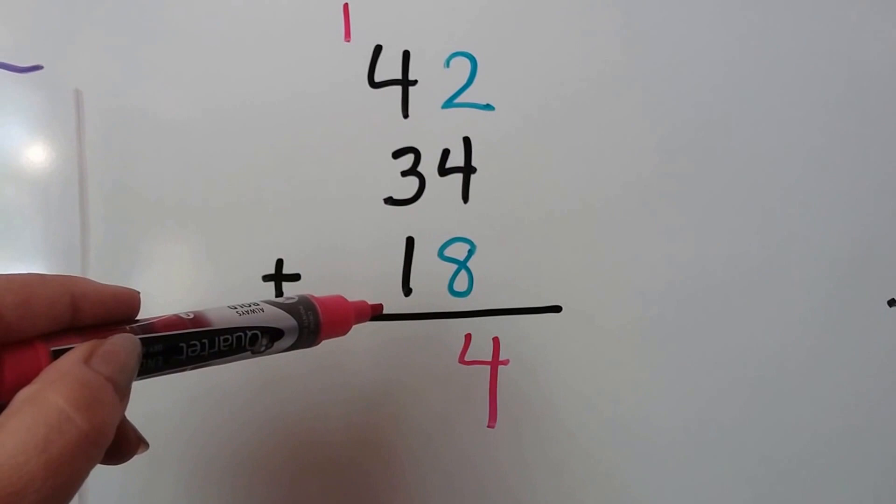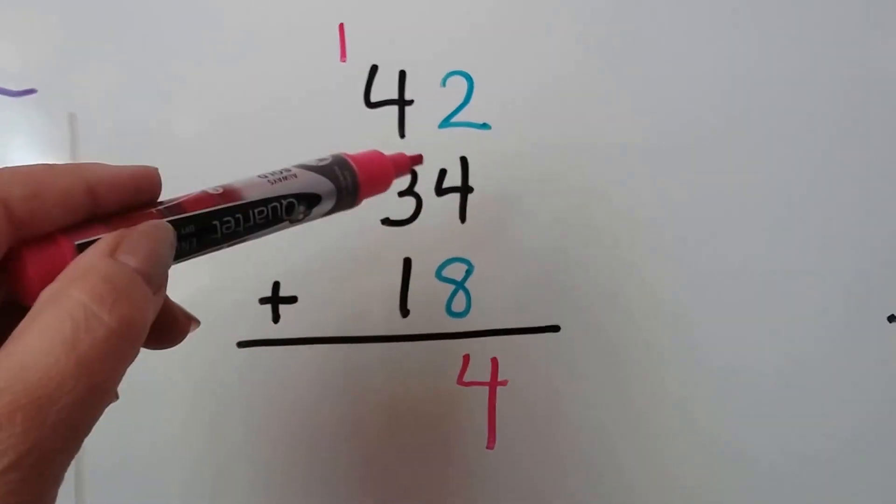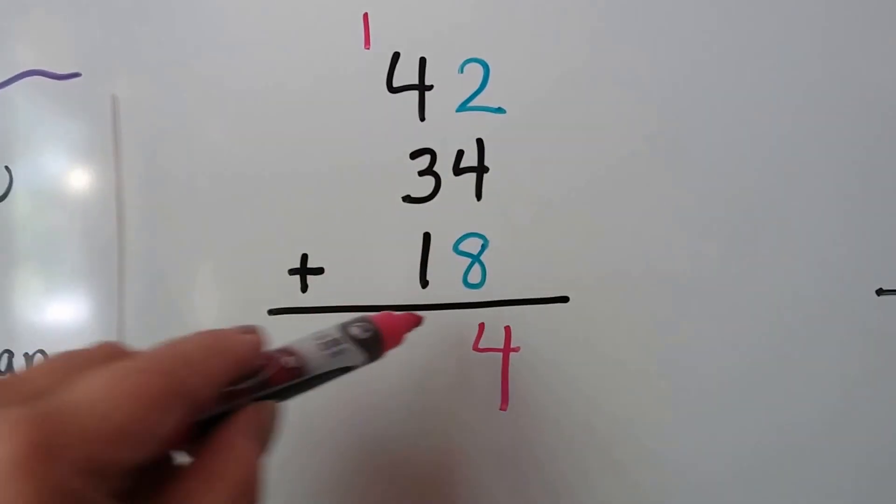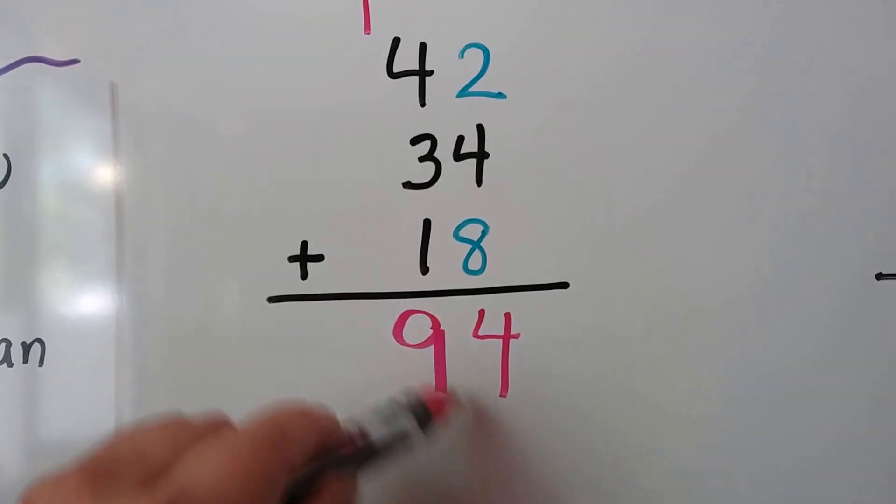Now we can just add the tens place: 4, 5, 6, 7, 8, 9. 94.